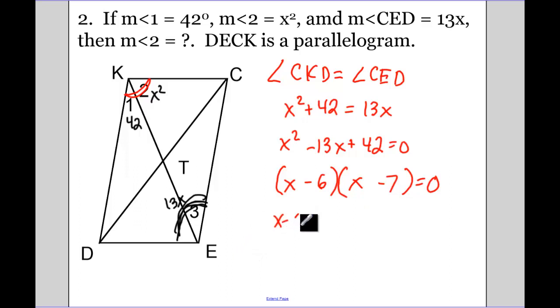So X minus 6 equals 0, and X minus 7 equals 0. So X equals 6 or 7. Now always make sure you're answering the question. I need to find the measure of angle 2. So the measure of angle 2, that's X squared. I have two possibilities: it can be 36, because that's 6 squared, or 49, which is 7 squared.